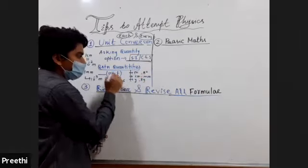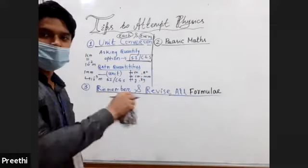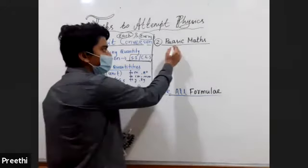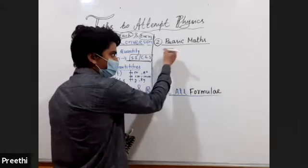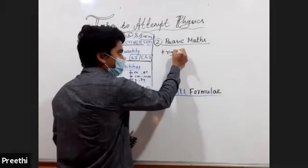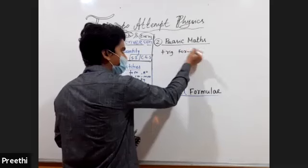So must check up your option quantity, what you need to give it according to unit conversion. Second thing is basic maths. So in basic maths must remember some basic mathematics is trigonometric formulas. Trigonometric formula must remember like sine theta, cos theta, its value.